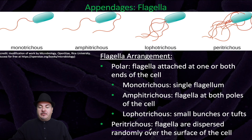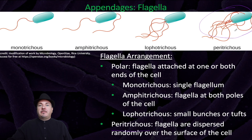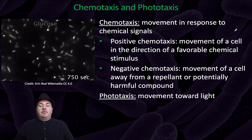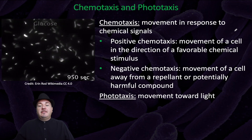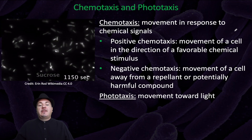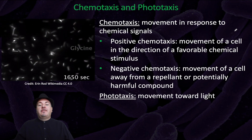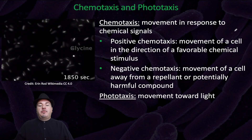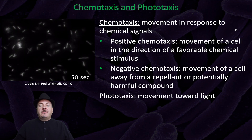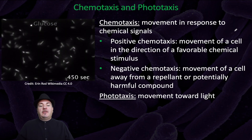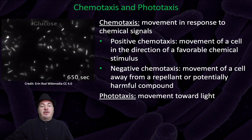Then you can also have peritrichous, which is where the flagella are dispersed randomly over the surface of the cell. Now, the bacteria are going to be moving — why might they move? They could move due to chemotaxis, which is movement in response to chemical signals. We have positive chemotaxis, which is movement of a cell in the direction of a favorable chemical stimulus. For example, if bacteria detect a food source like glucose, they might start swimming towards that food source.